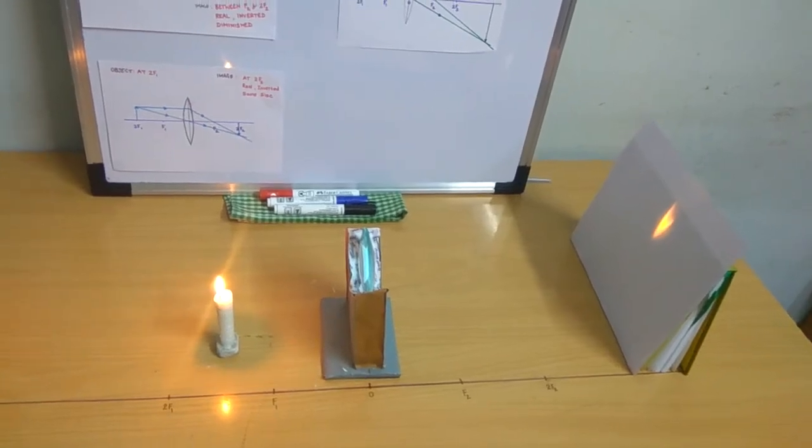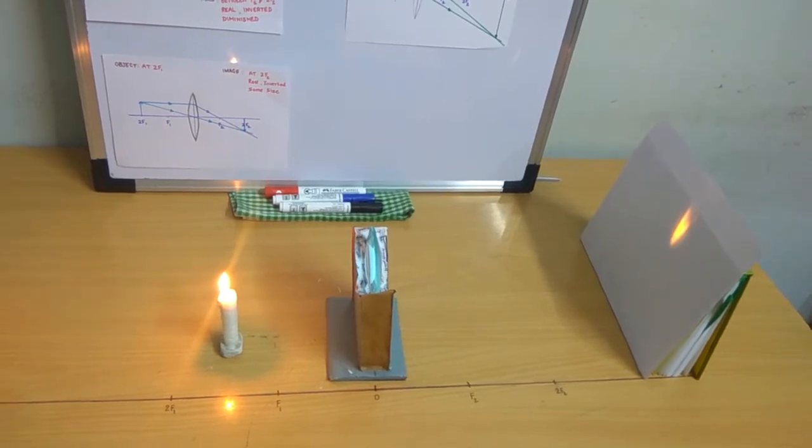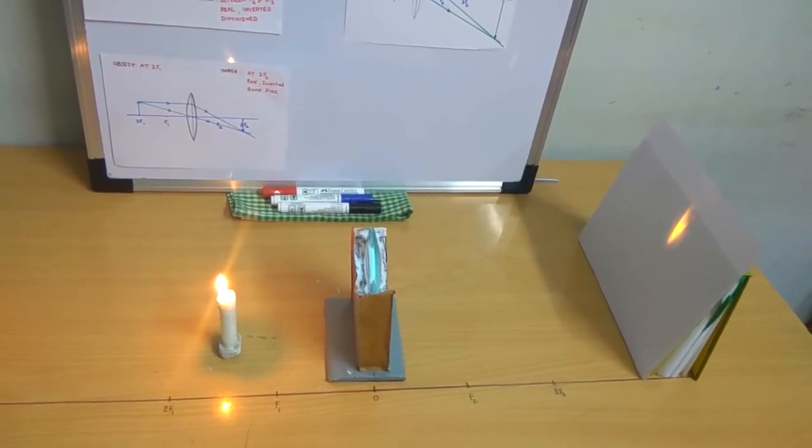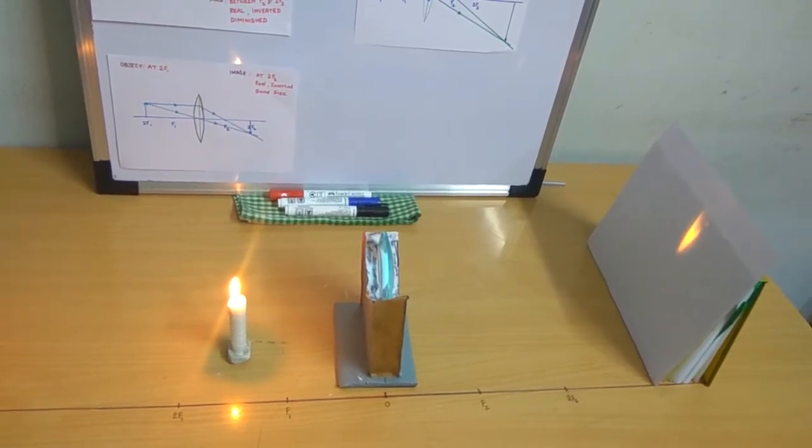Hello and welcome to my channel, Simple Science. In this experiment, we are going to see the refraction through the lens or image formation by a convex lens for three different positions of the object.